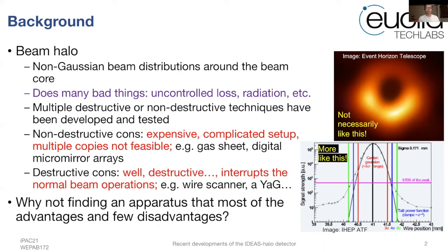There are multiple destructive and non-destructive techniques developed and tested to measure the halo distribution. I will now emphasize the cons. For non-destructive techniques, most are expensive and require complicated setups, and multiple copies of those measurement setups will not be feasible to install at the same facility. Those techniques include gas jet monitors, digital micromirror arrays, etc. The cons for destructive methods are that, first of all, they are destructive — you won't be able to use the beam at all, or the measurement will interrupt normal beam operation. Destructive techniques include wire scanners, YAG screens, etc.